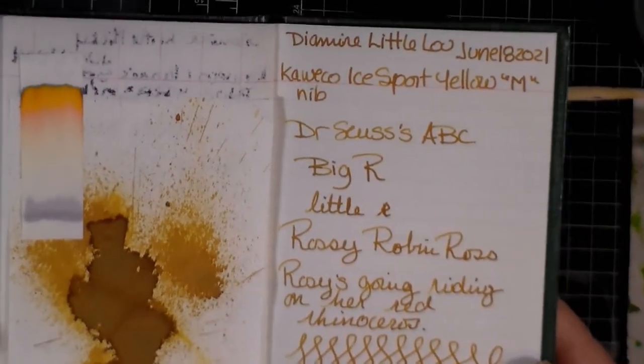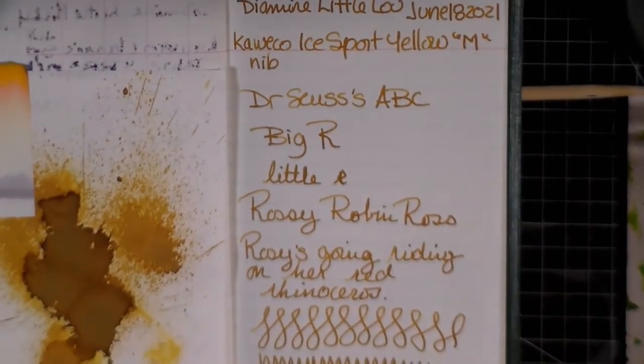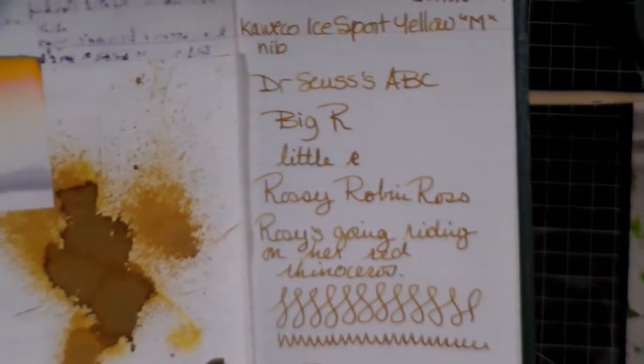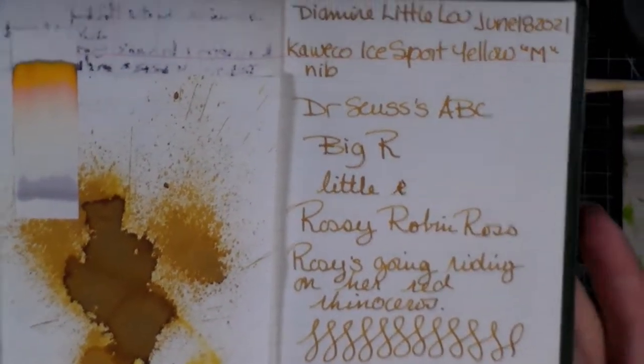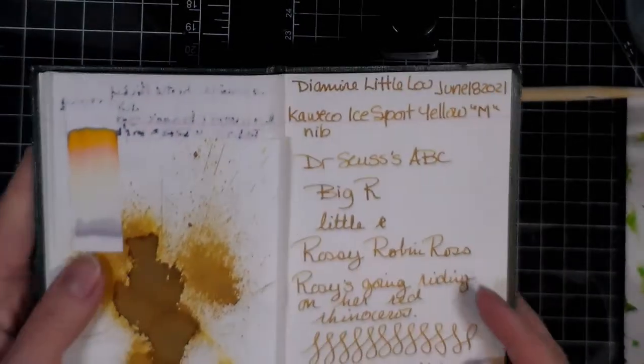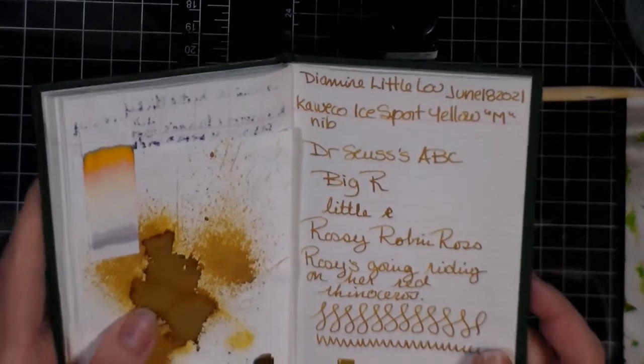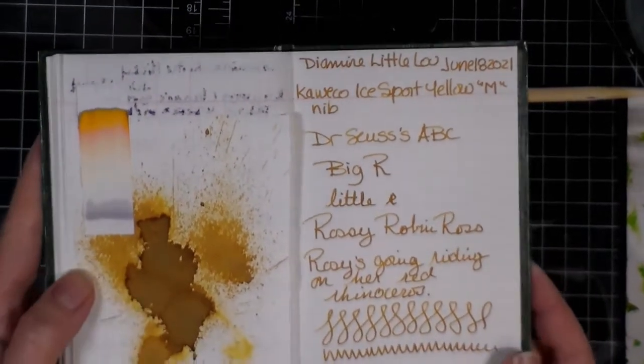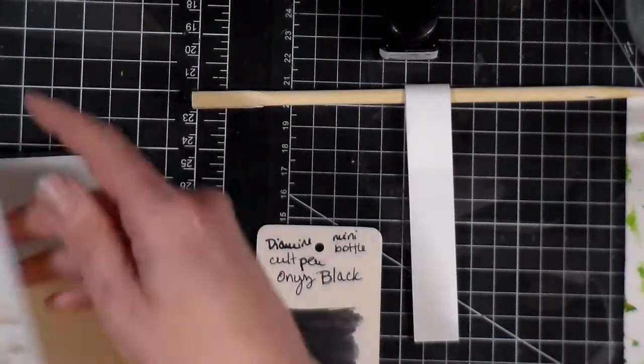So yesterday we had this yellow which was Diamine Little Lou. It's very pretty. It's growing on me, I have to say. It's dark enough to be able to read it so it is very pretty. If I decide to get a yellow ink that could be one of the contenders because it's almost orangey. It reminds me of fall though.